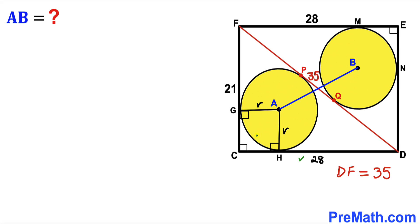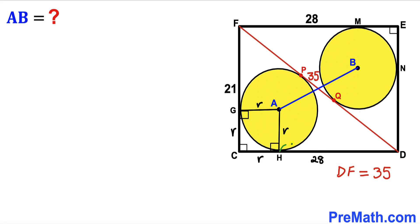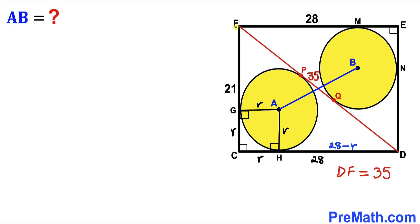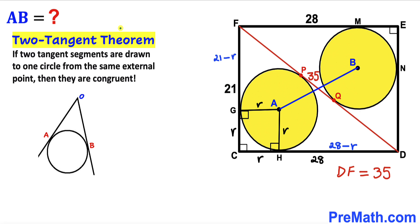We can observe that CHAG is a square, so all its sides equal r. Since CD is 28 and CH is r, segment DH equals 28 minus r. Likewise, CF is 21 and CG is r, so segment FG equals 21 minus r.